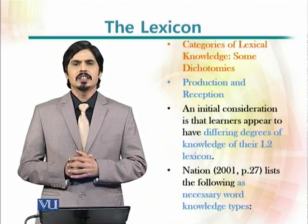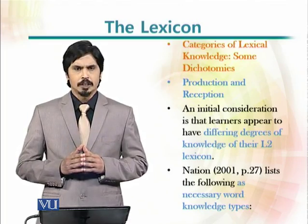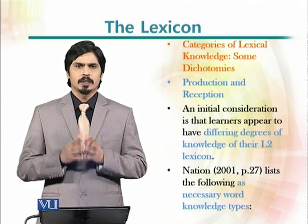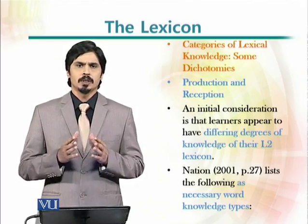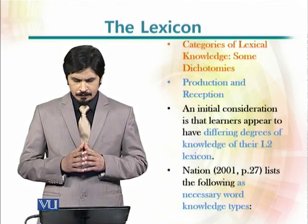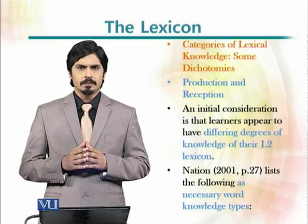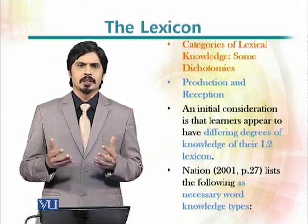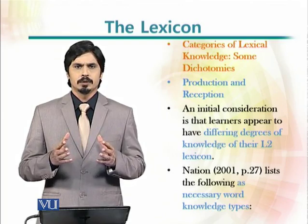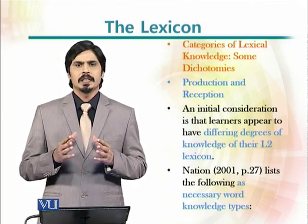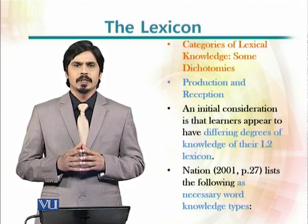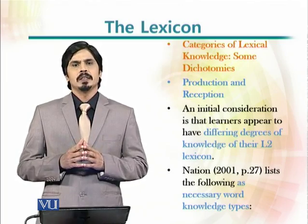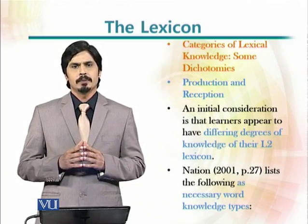There are certain categories of lexical knowledge that we can understand through certain dichotomies — for example, the dichotomy of production and reception. There are certain productive or receptive skills which need to be understood in the acquisition of vocabulary, and we can see there are different levels of learners' acquisition of vocabulary.